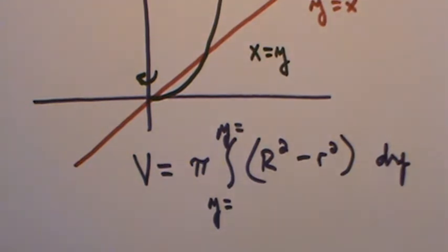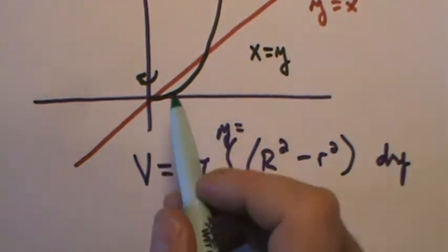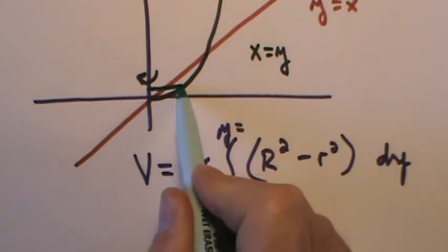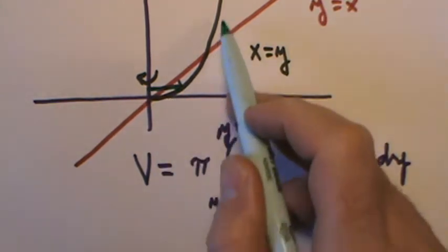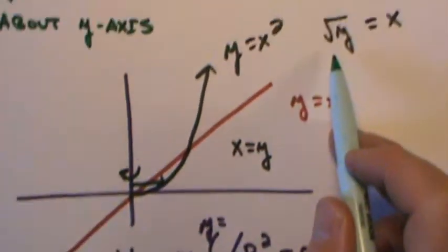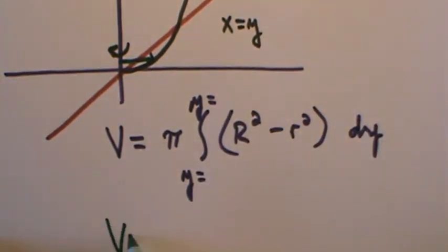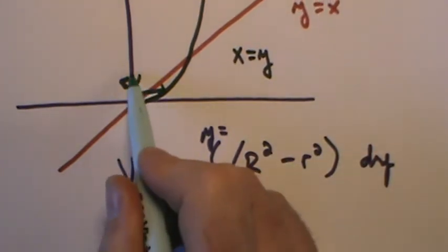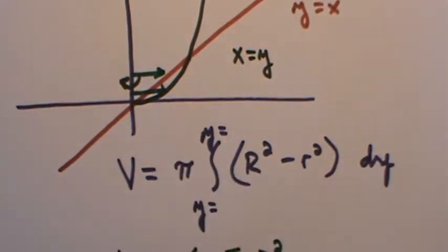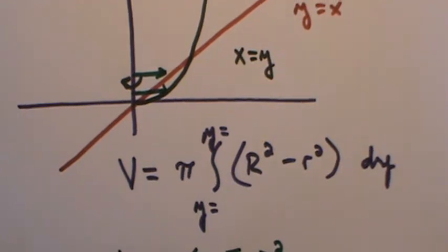Now, as I look at this, the furthest distance that I'm traveling out here is going to be that rad y. And so, this would be volume equals the integral rad y squared, minus the closest distance is the linear function, and so that would just be a y that gets squared.